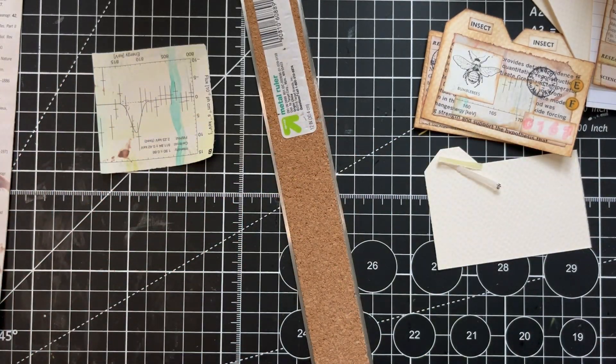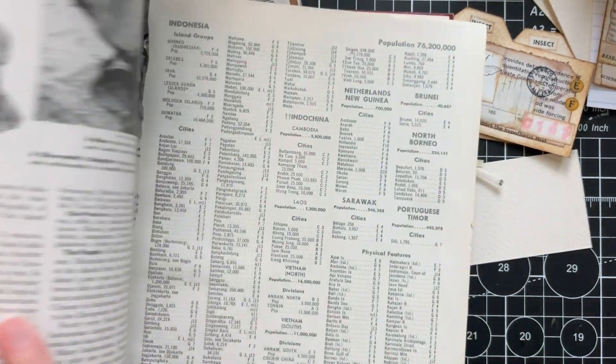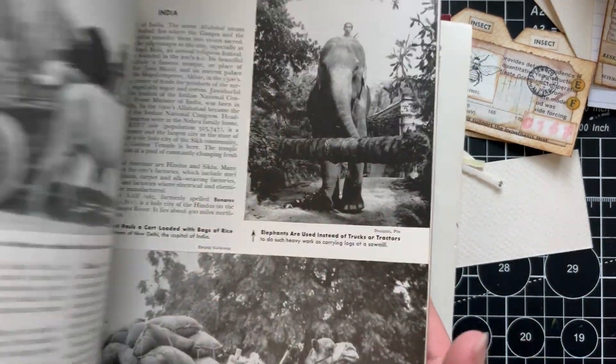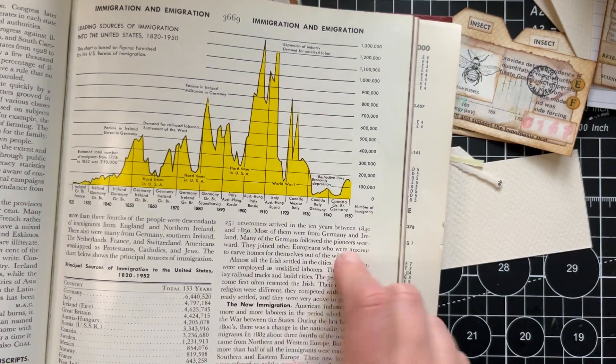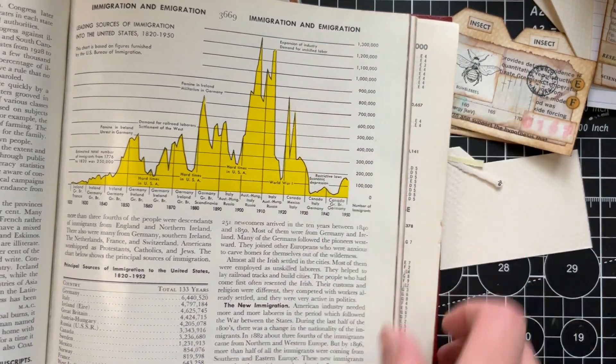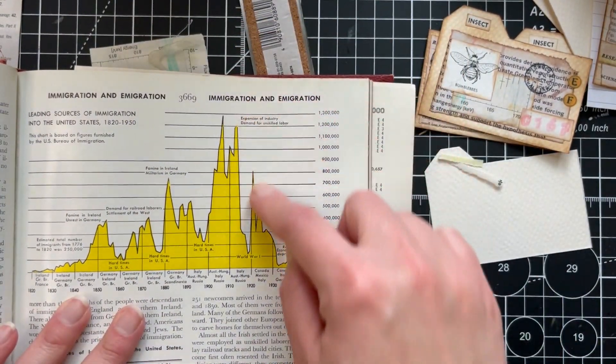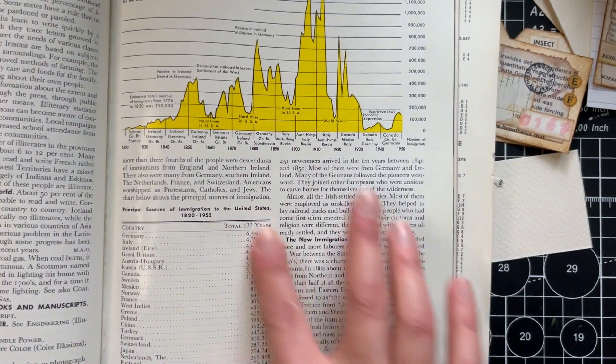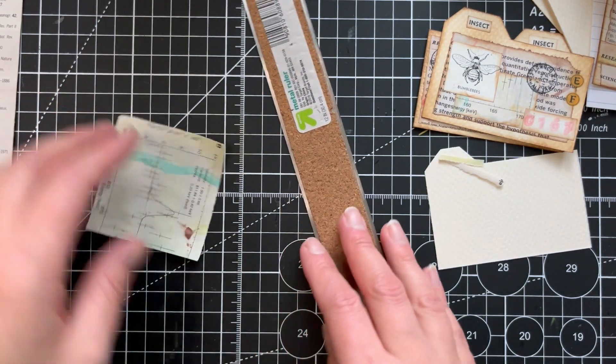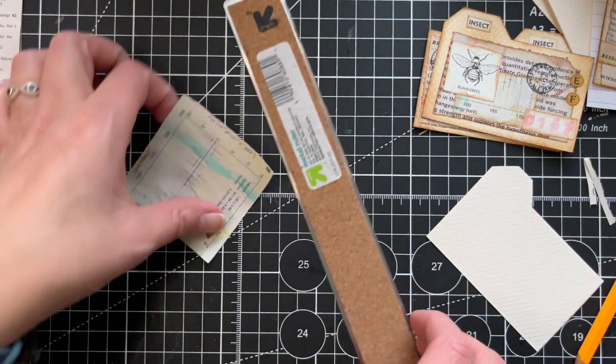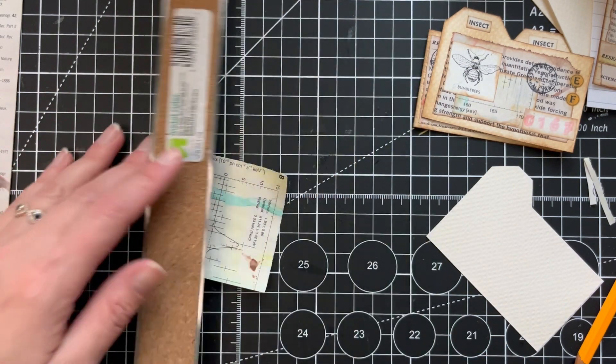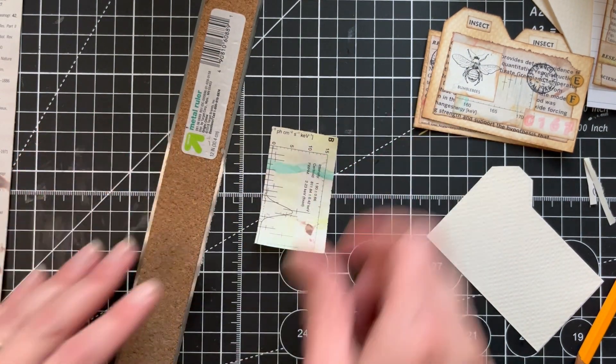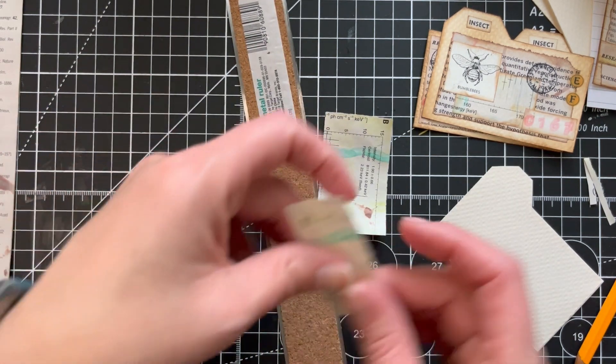And also encyclopedia books. They do have sometimes graphs. This one has a graph with the numbers. So you could use this. You could cut here and use that, or a table. A table is very, this table is very scientific looking. So yeah, if you want to do like a scientific theme, you can for sure get that from an encyclopedia.